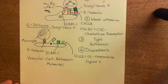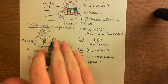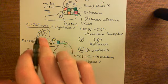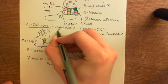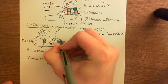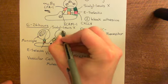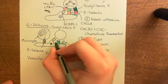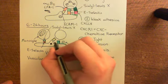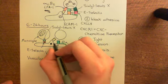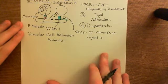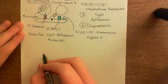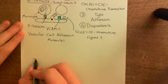What follows the rolling is a weak adhesion between the monocyte and the endothelium. Let's draw a longer endothelial cell and monocyte to give us more space to work with and illustrate this interaction.